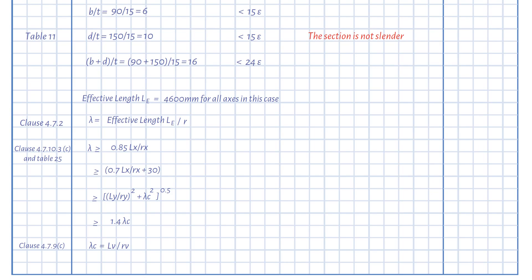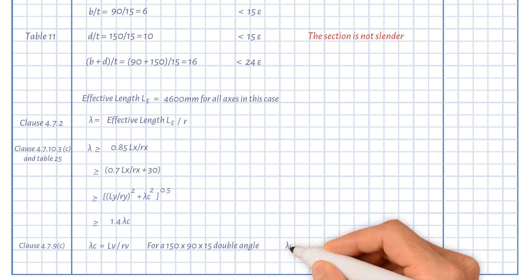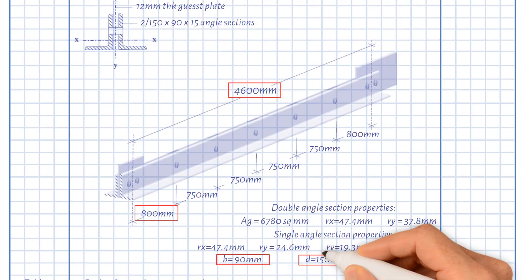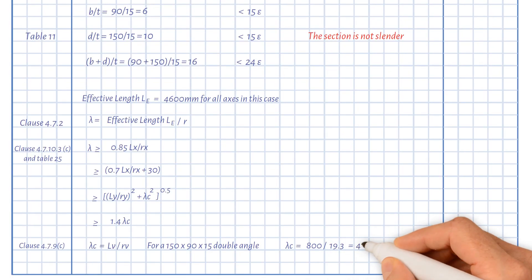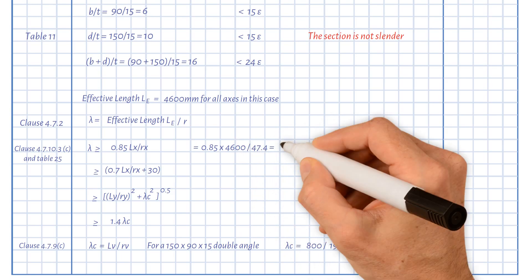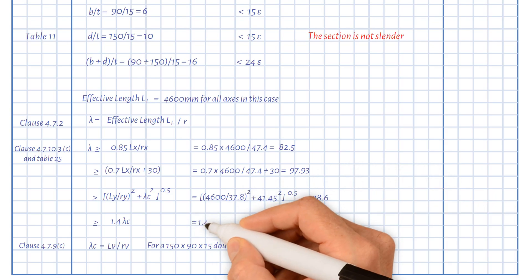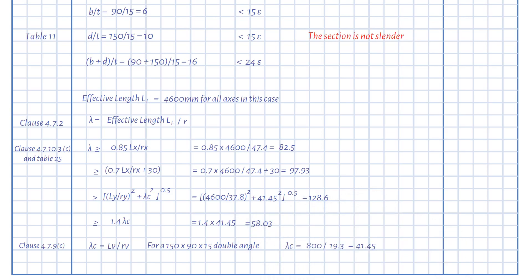Lv is measured between interconnecting bolts for back-to-back struts; rv is the minimum radius of gyration of a single angle, i.e. about the v-v axis. Lx equals Ly equals 4,600 mm. For the 150 by 90 by 15 double angle, lambda_c equals 800 divided by 19.3 mm, which is 41.45. Putting our values into these equations gives the following results. Therefore, the critical slenderness lambda equals 128.6.